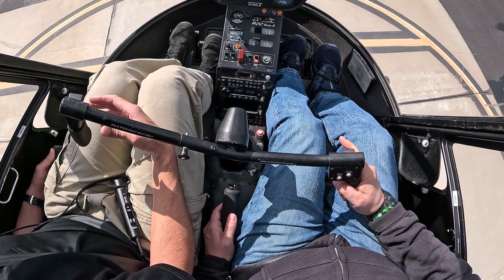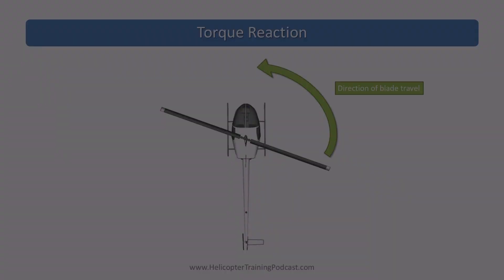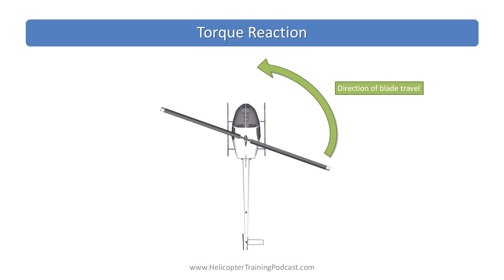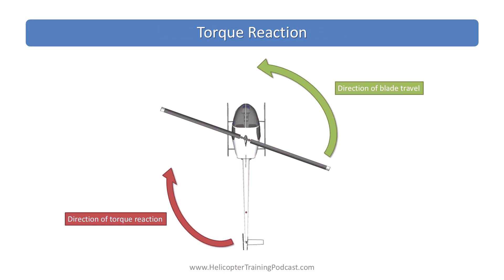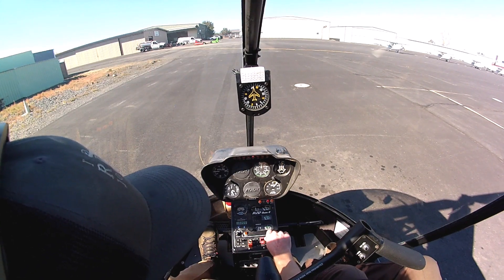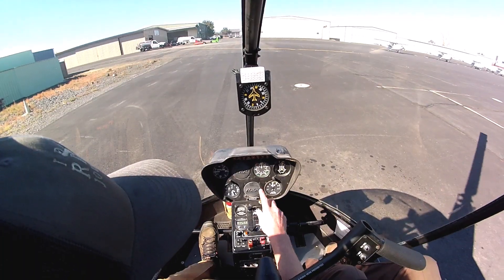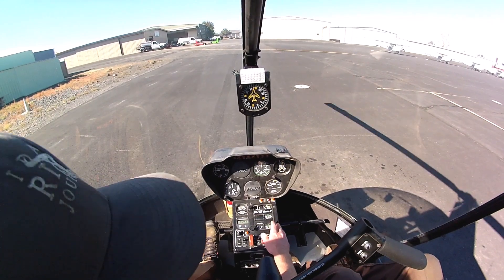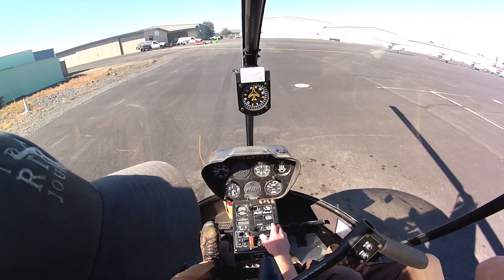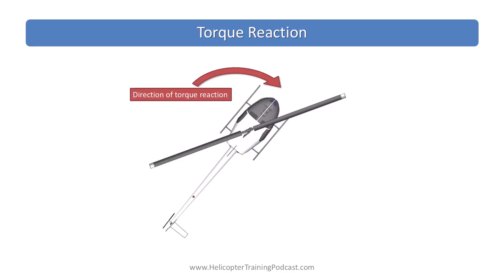What exactly is torque reaction? As the engine pushes the helicopter blades one way, the fuselage wants to spin in the opposite direction due to Newton's third law of motion: to every action there is an equal and opposite reaction. Because this reaction is a rotational force in the helicopter, we call it torque reaction. When sitting in a helicopter pilot's seat looking out the front of an American helicopter like the R22, the blades move from right to left, so the torque reaction will go the opposite direction, trying to push the nose right.